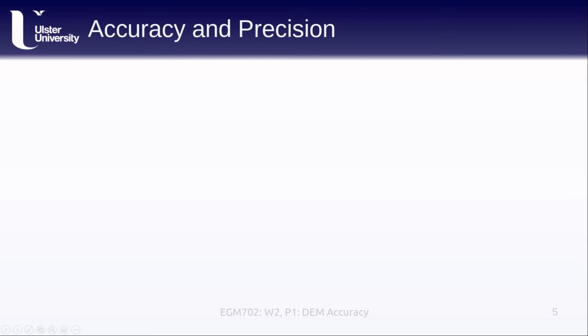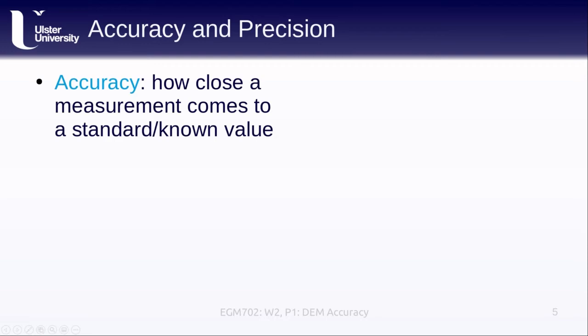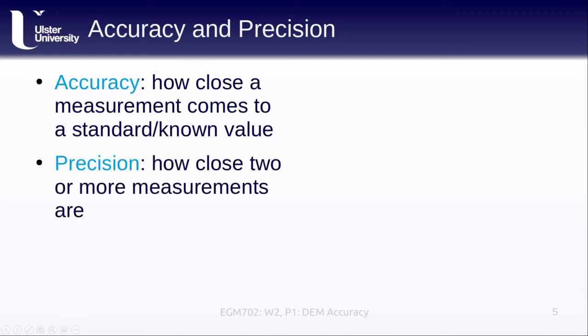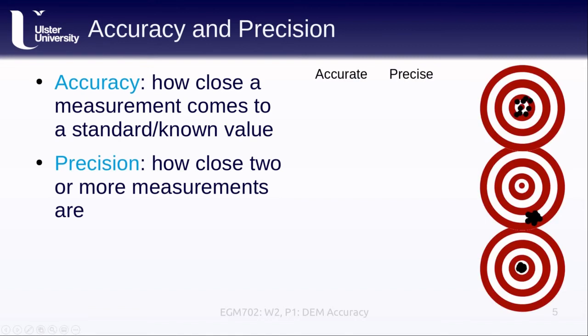I've used two words now that we should stop and define and discuss, accuracy and precision. A definition that we'll use for accuracy is how close a particular measurement comes to a standard or known value, and precision is how close two or more measurements are.